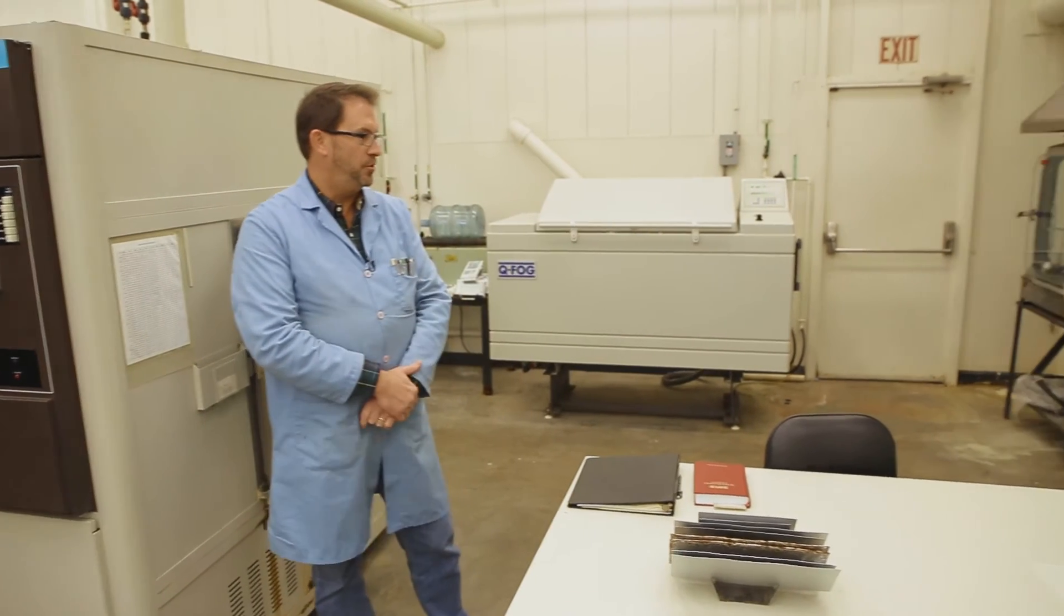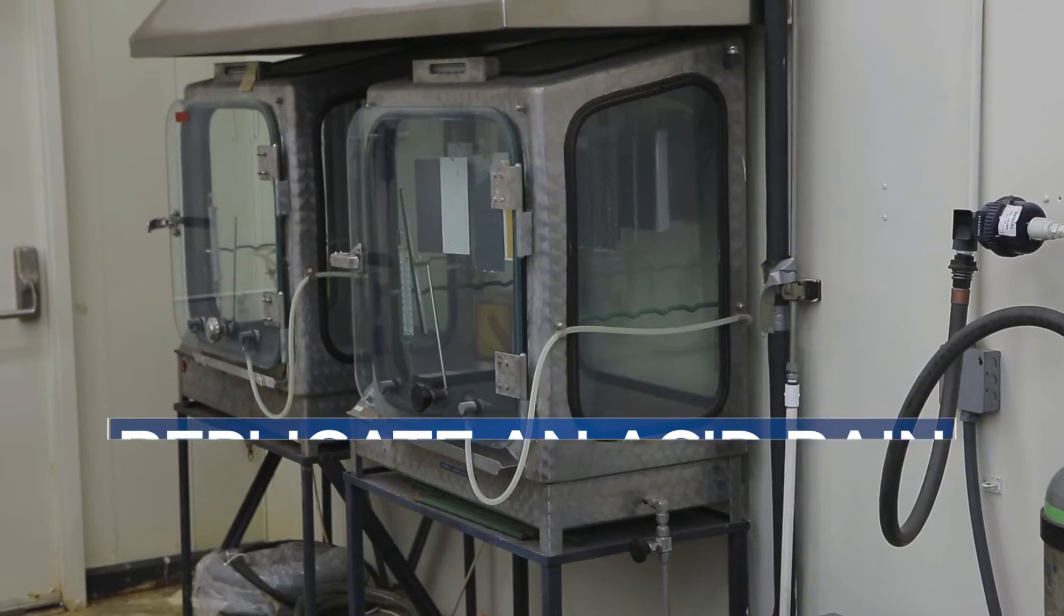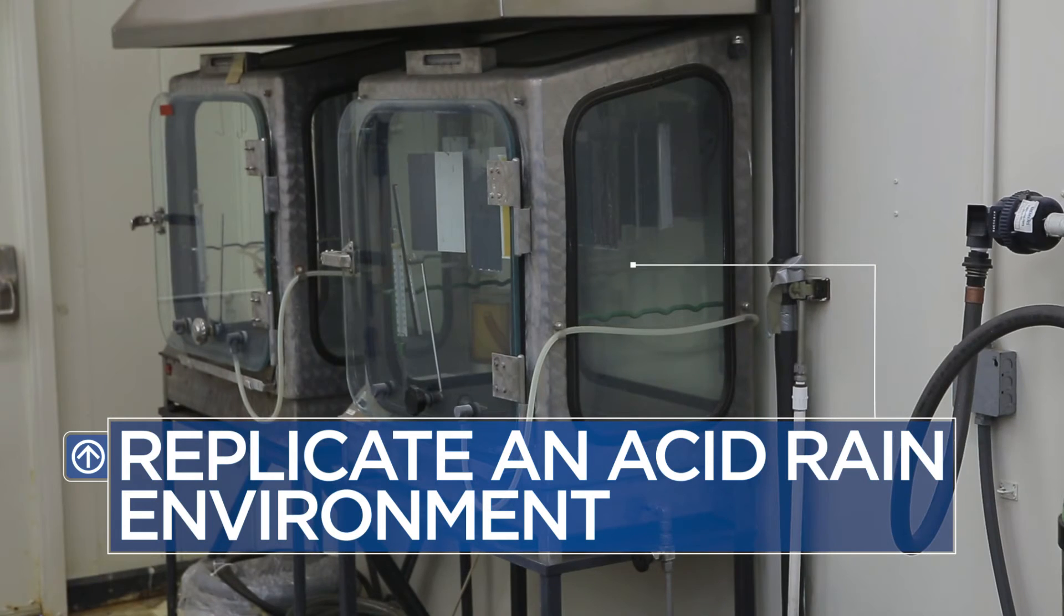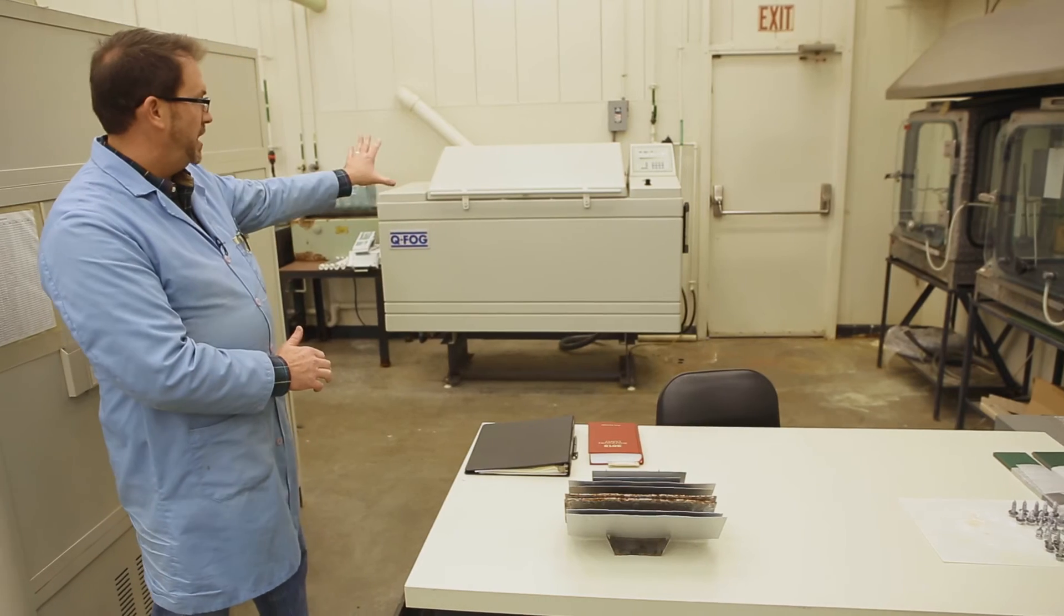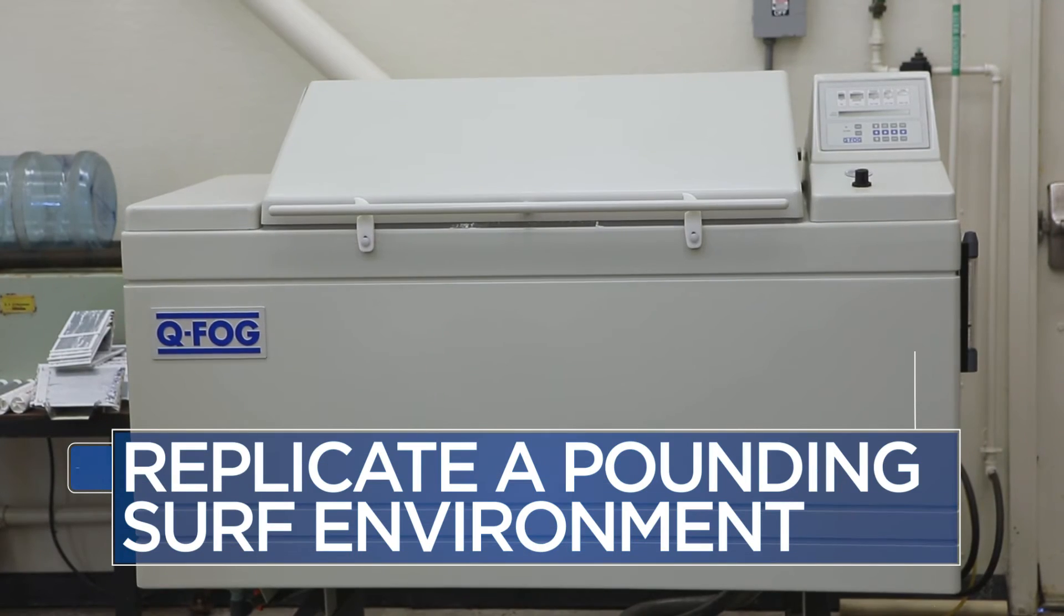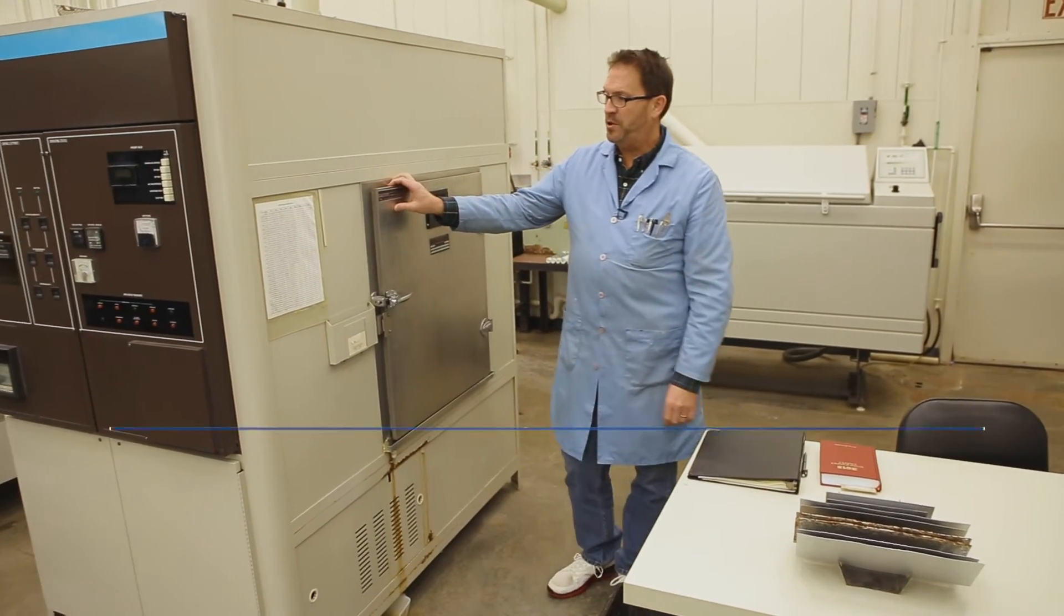Back here in the corner I have two stainless steel cabinets called Keshenis cabinets. The big cabinet back here is salt spray. This is a dew cycle weatherometer.